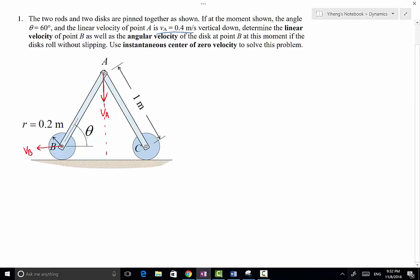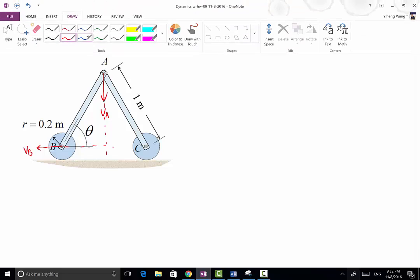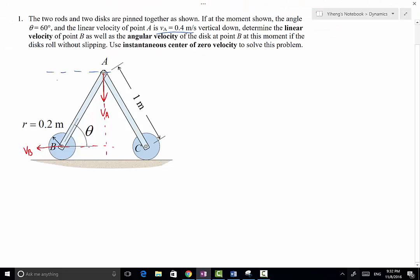Therefore, if we extend this line and extend this line, and then we can draw lines that are perpendicular to the two linear velocities, and where they intersect, this is IC, the instantaneous center of zero velocity at this moment.